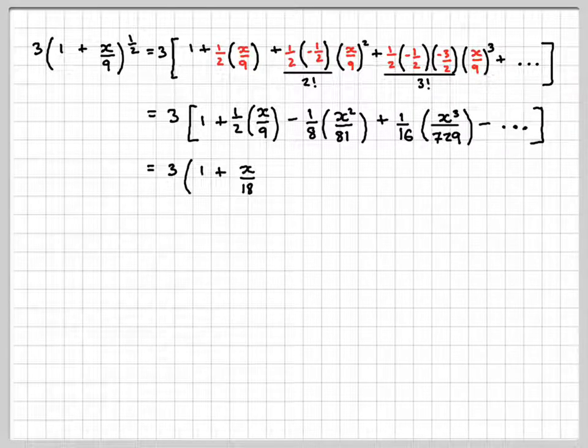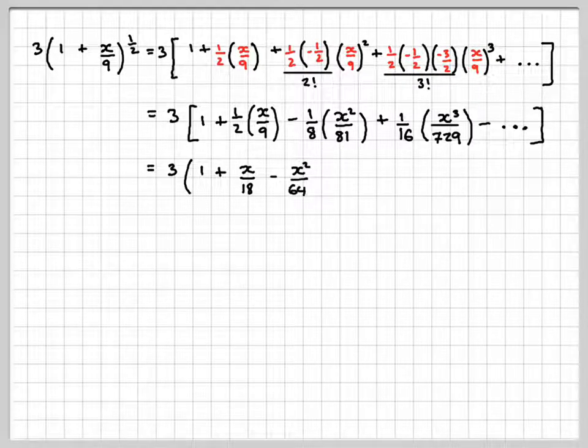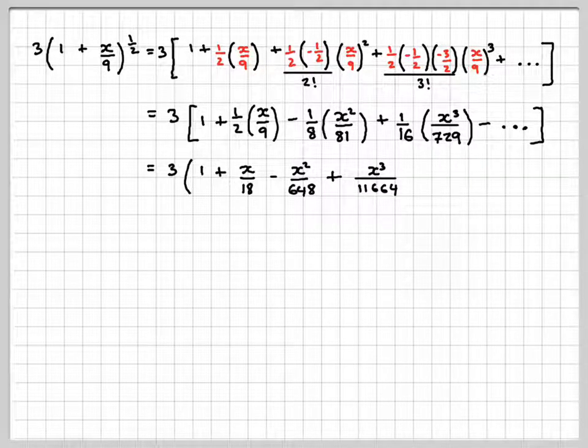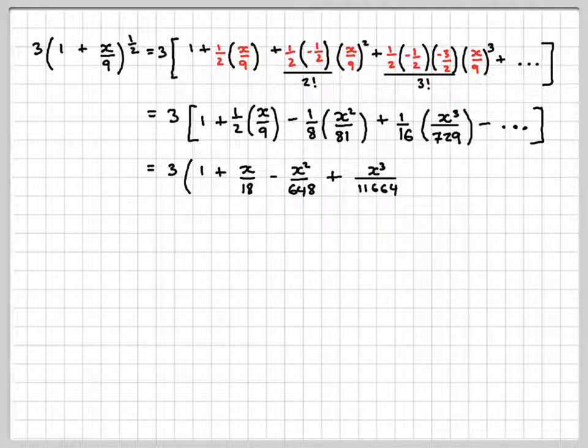Then doing this multiplication, so we get 1 plus x over 18 minus 1 eighth times x squared over 81 is x squared over 648, plus 1 sixteenth times 729 will become x cubed over 11,664.